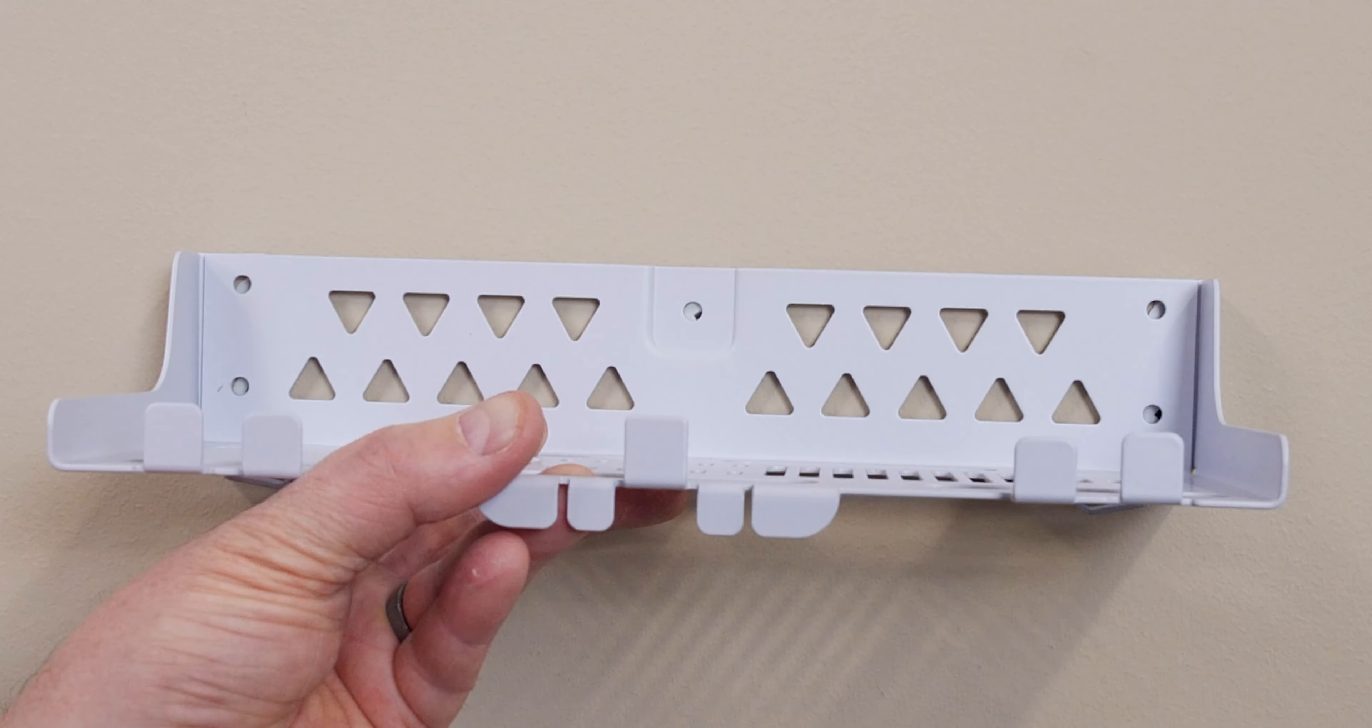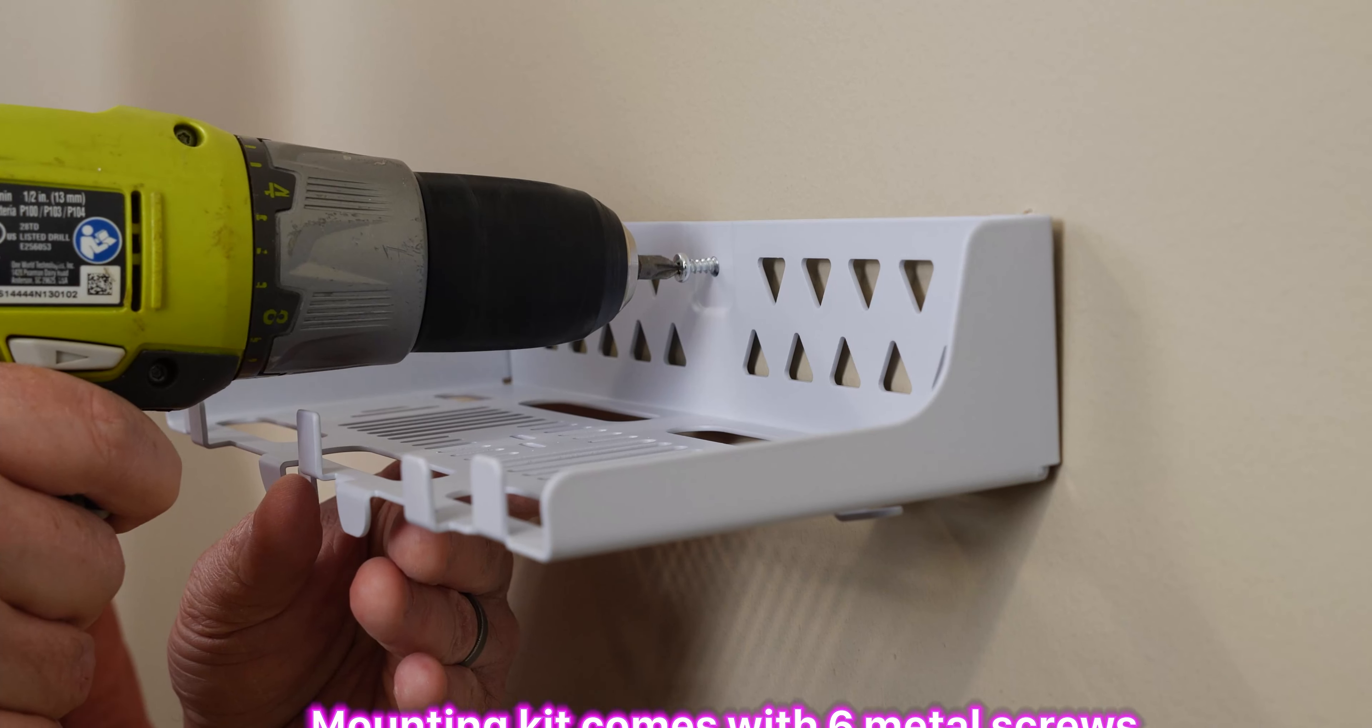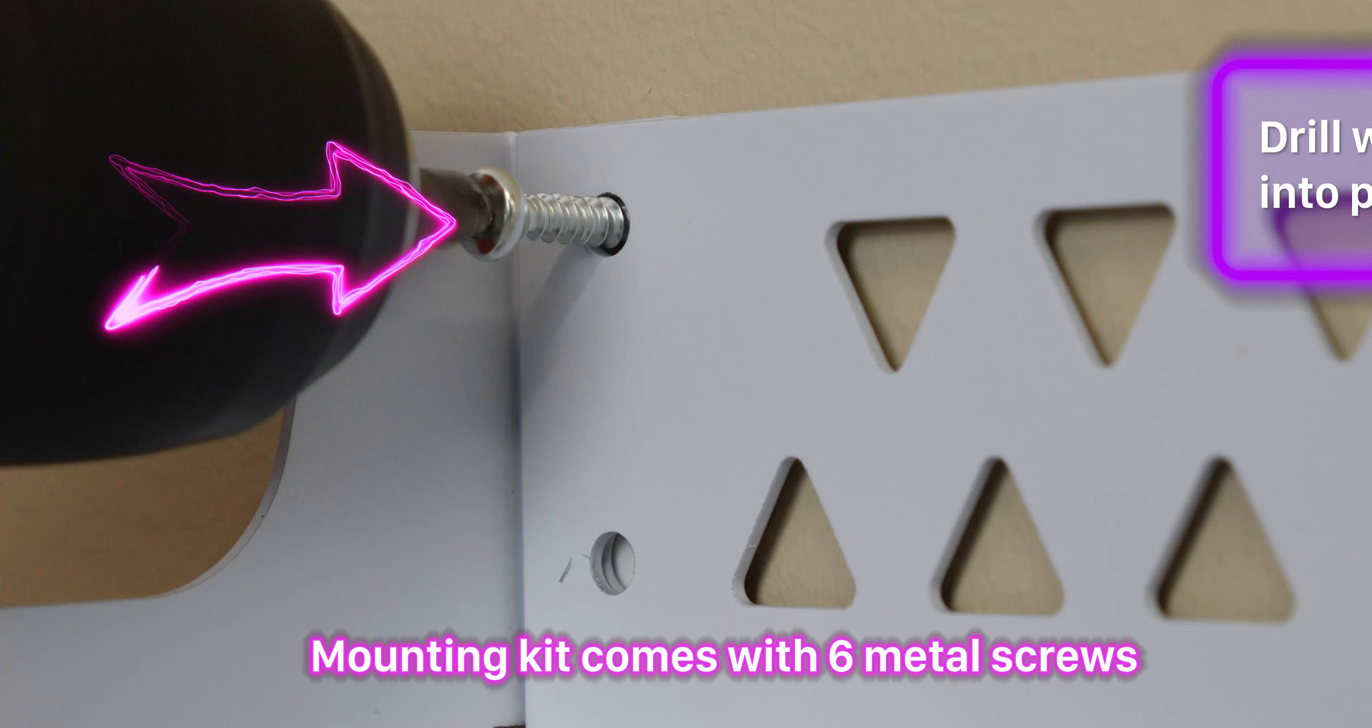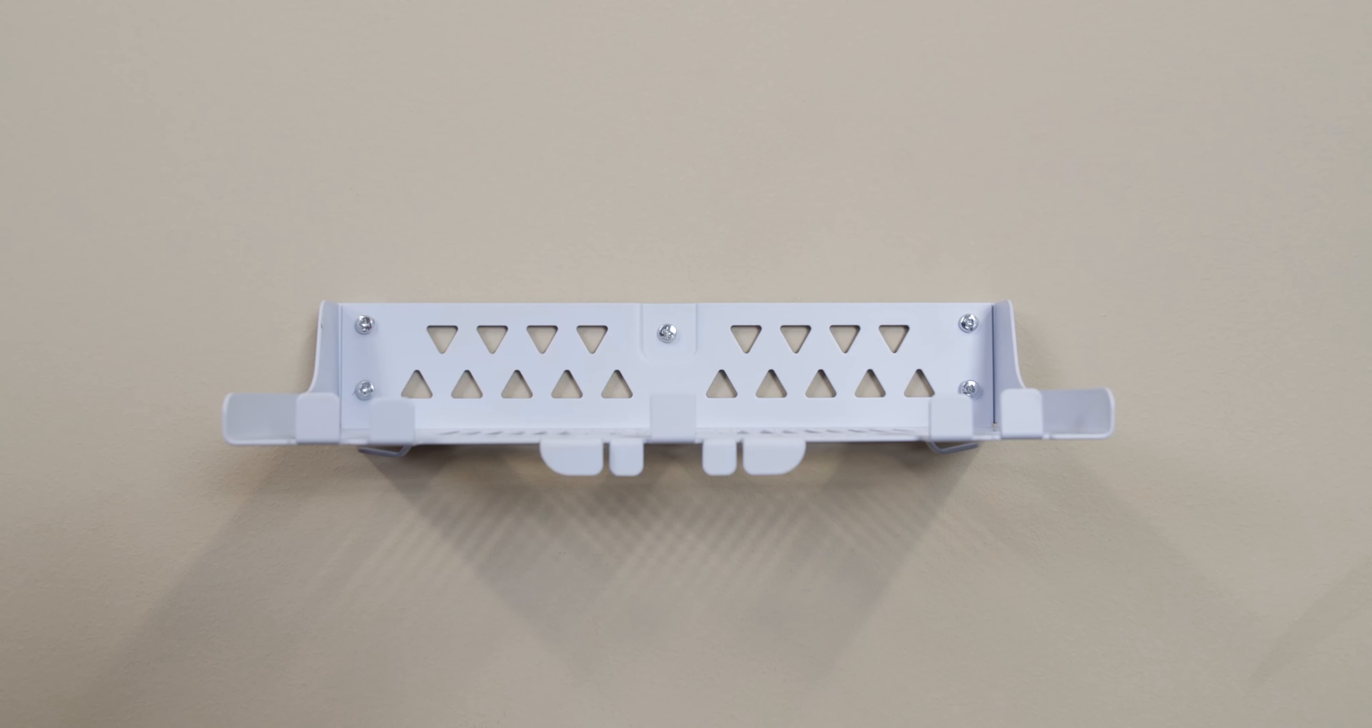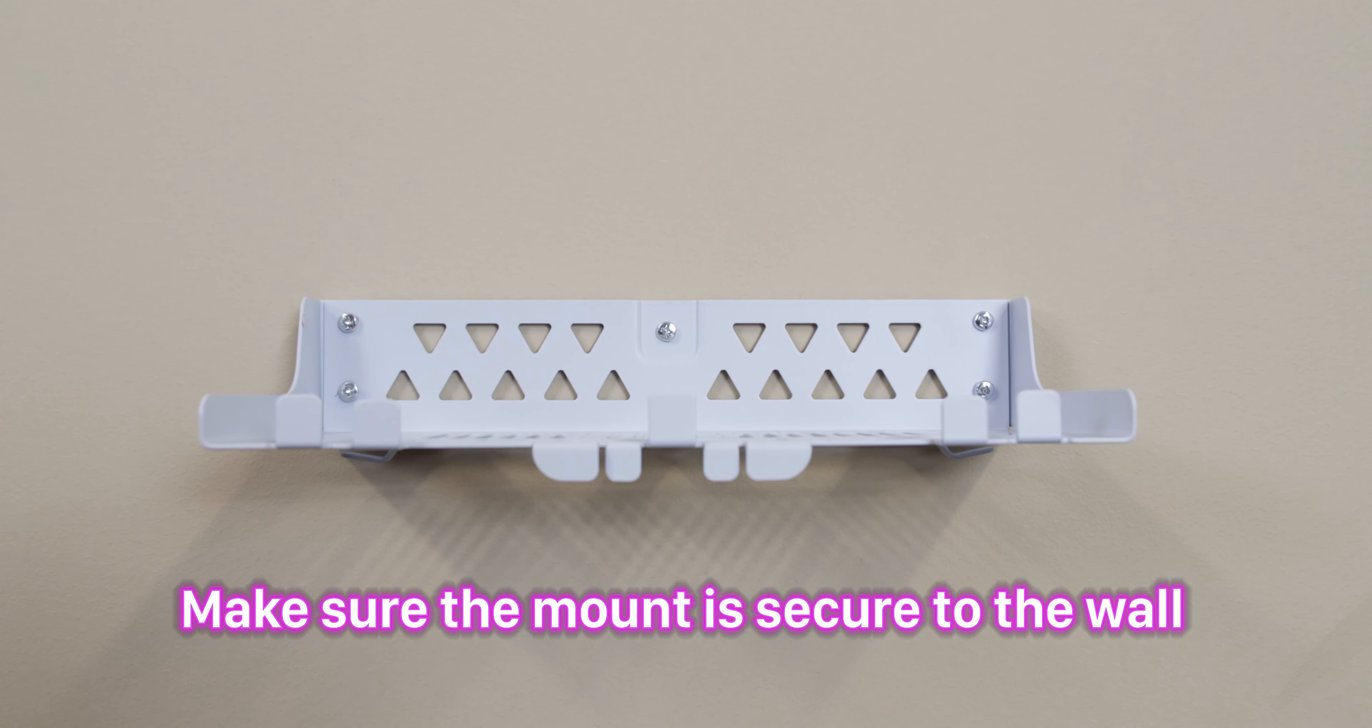Line up your wall mount to those five holes, then screw or drill in your wall screws into the said holes and anchors. Make sure to drill it thoroughly and make sure the wall mount is firmly secured to the wall.